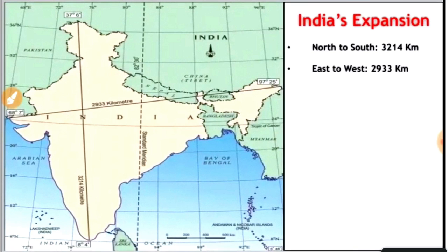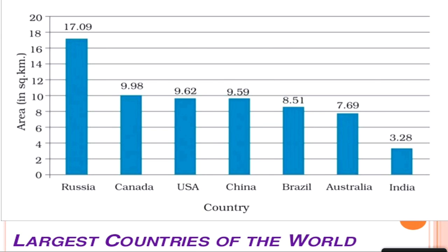Now, a comparison of where India stands — India is the seventh largest country in terms of area. Russia has 17.9 million square kilometers whereas India is only 3.28 million square kilometers. That means India is approximately five times smaller than Russia.